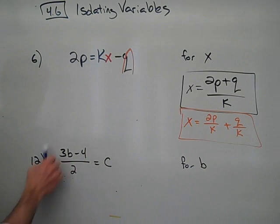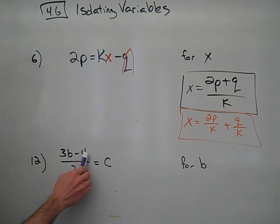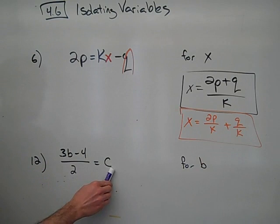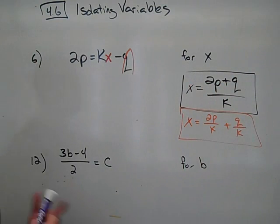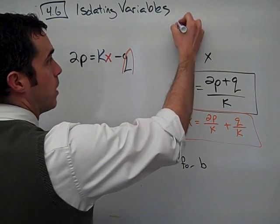I did want to address this one as well. So now we have this, a large fraction, 3b minus 4 over 2 equals c. And now, once again, we're going to find out what b equals. We're going to isolate this for b.